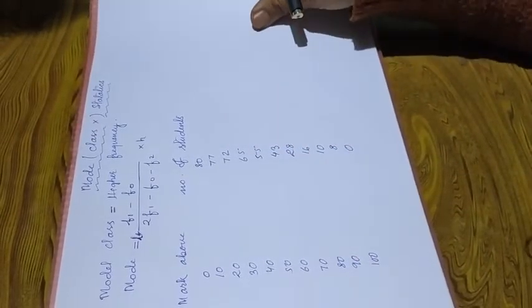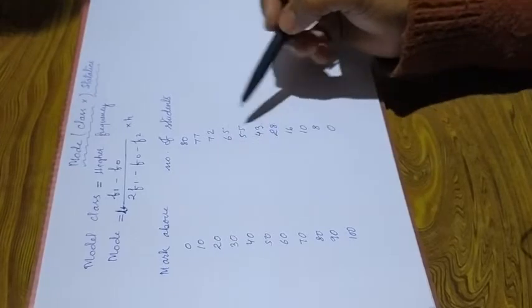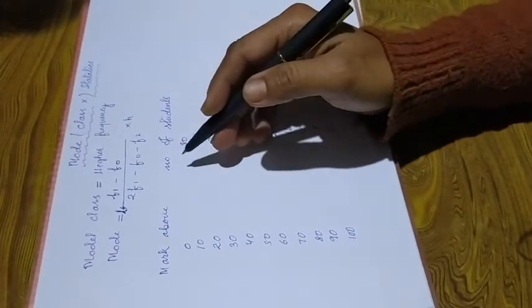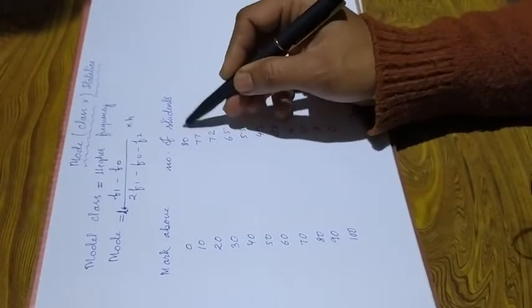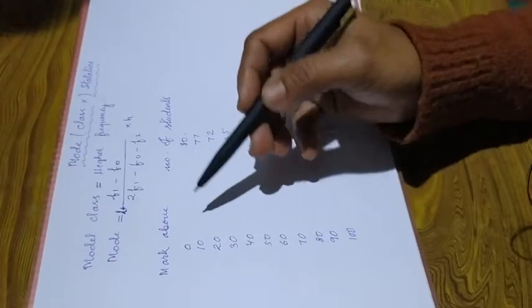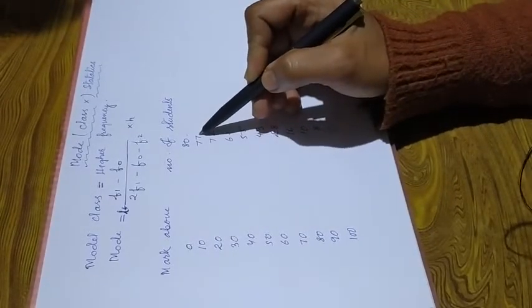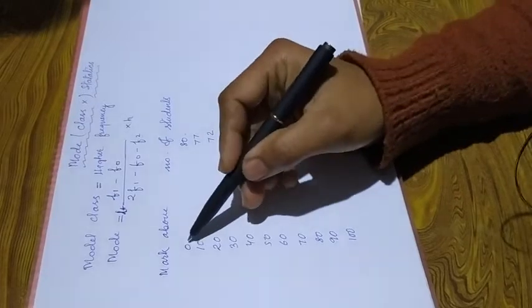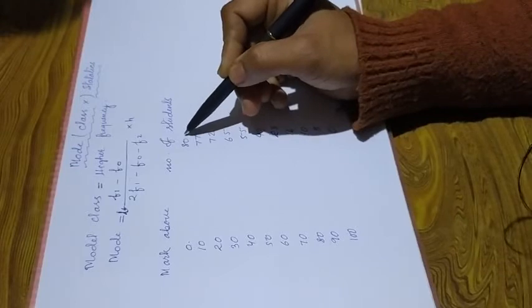The table gives the frequency — number of students — for marks. The class intervals shown include ranges up to 80, with corresponding frequencies: one value is 77, another is 72, and from 0 to 80 the mark above is 82.